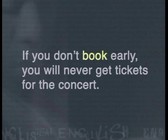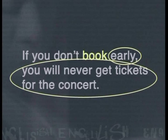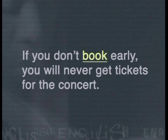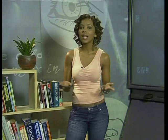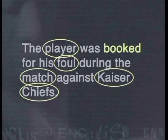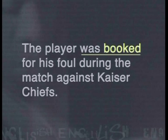Let's go back and look at the context clues to see if you were able to work out the different meanings. In 'If you don't book early, you will never get tickets for the concert,' the words 'early' and 'you will never get tickets for the concert' let you know that book means 'reserve tickets in advance.' We can also work out that book is a verb here. In 'The player was booked for his foul during the match against Kaiser Chiefs,' the context is provided by the words player, foul, match, and the knowledge that Kaiser Chiefs is a soccer team. These clues help us work out that booked means his name was written down by the referee because he committed an offence — again a verb. We could see how words can change their meanings and parts of speech depending upon the context.